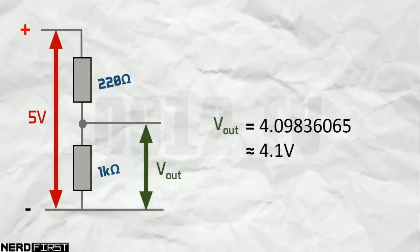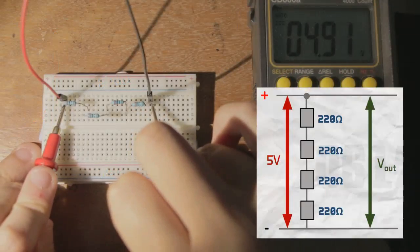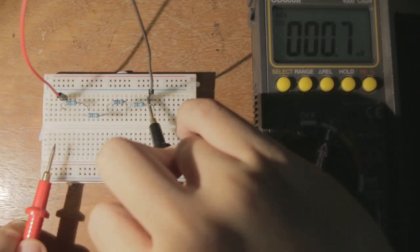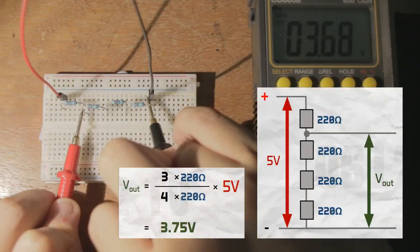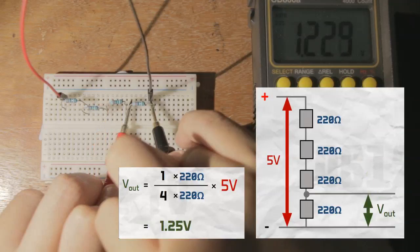With this same logic, we can easily set up a potential divider using more resistors. For example, here's one using 4 resistors. By summing the resistances of the resistors below the point of contact and across the entire circuit, we can compute the ratio and use that to find the resultant voltage.